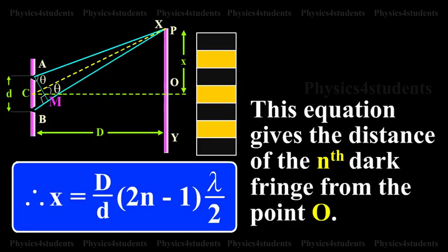Therefore, x is equal to D by d into 2n minus 1 into lambda by 2. This equation gives the distance of the nth dark fringe from the point O.